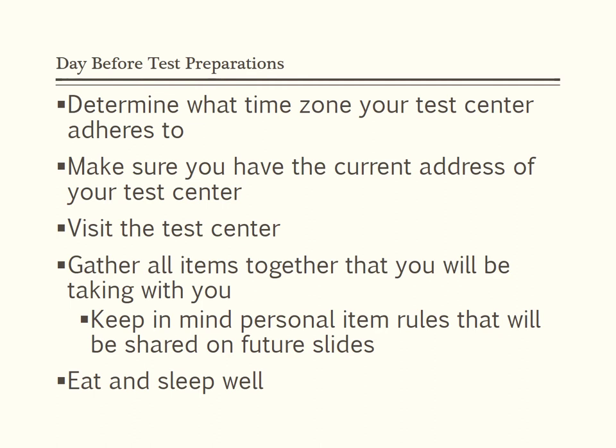If such an address change occurs, the AAMC or Prometric will make every effort to email or call you before the test date. Number three: if you have registered for a to-be-determined (TBD) location, your final testing location will be communicated via email and updated on the MCAT Scheduling and Registration System at least three weeks — 21 days — prior to your exam. It is best to plan ahead by locating the center prior to test day so you know how to get there and how long it will take.